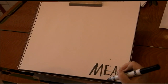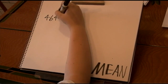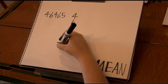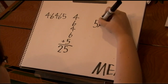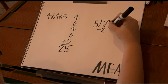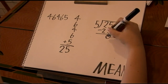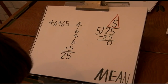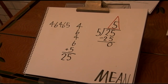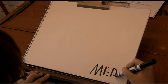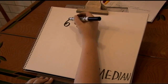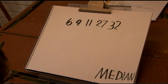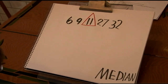Let's start with the mean. The way to find the average is to add the numbers, then divide the answer by the number of numbers in a sequence. Now let's go to the median.